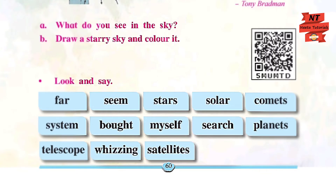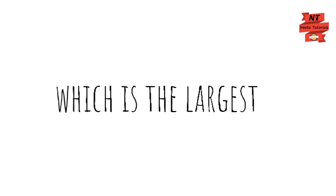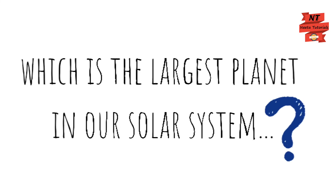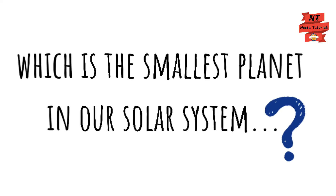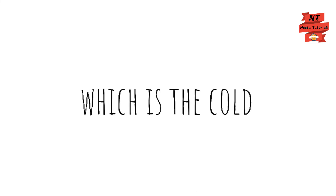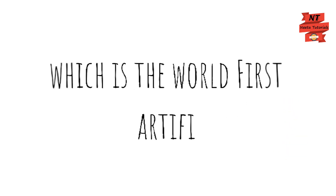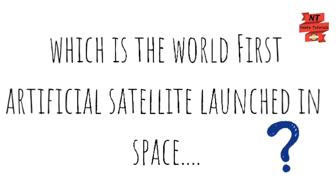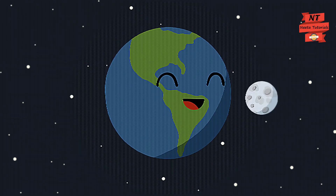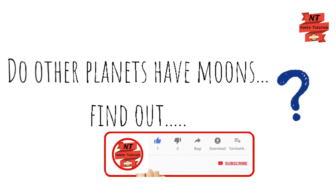Here is an interesting assignment for you. You will find the answers with the help of your parents or elders. Questions: Which are the eight planets in the solar system? Name them. Which is the largest planet? Which is the smallest planet? Which is the hottest planet? Which is the coldest planet in the solar system? Which is the world's first artificial satellite launched in space? And finally, there is only one moon around Earth — do other planets have moons? Find out and write all answers in your notebook.